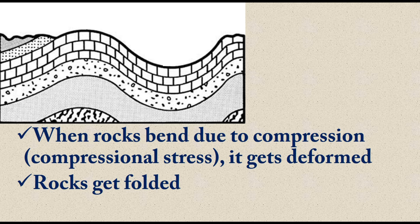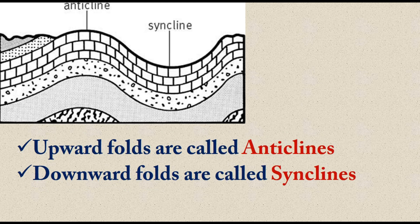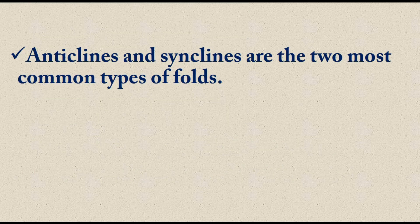The straight horizontal rock has now changed into folds or waves. This process is called folding. Each of these bends — upward and downward — are called folds. Due to compressional stress, rocks get deformed into different folds. There are two common types: upward folds and downward folds. Upward folds are called anticlines and downward folds are called synclines. There are many other types of folds depending on the degree and duration of force.